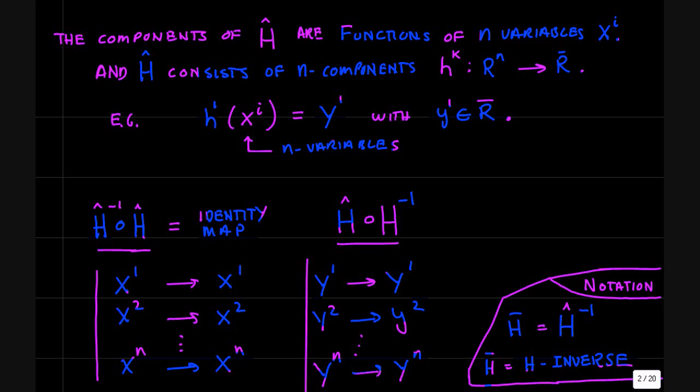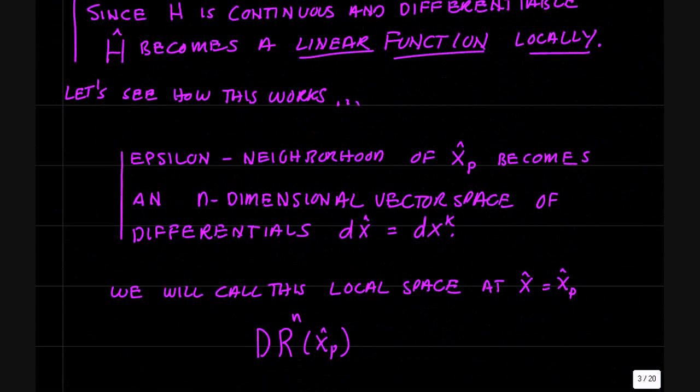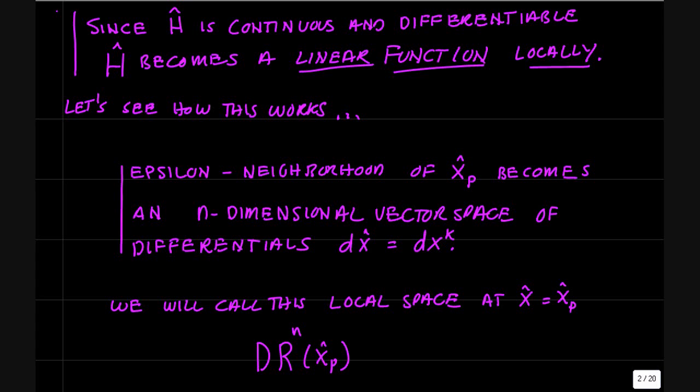Now, how do we go about finding the inverse function? Here is the key observation that lets us get going on this problem. Since the function h is continuous and differentiable, the h function becomes a linear function locally. So if you restrict your attention to an epsilon neighborhood around a point in R^n, then if we evaluate h in that neighborhood, it becomes a linear function.